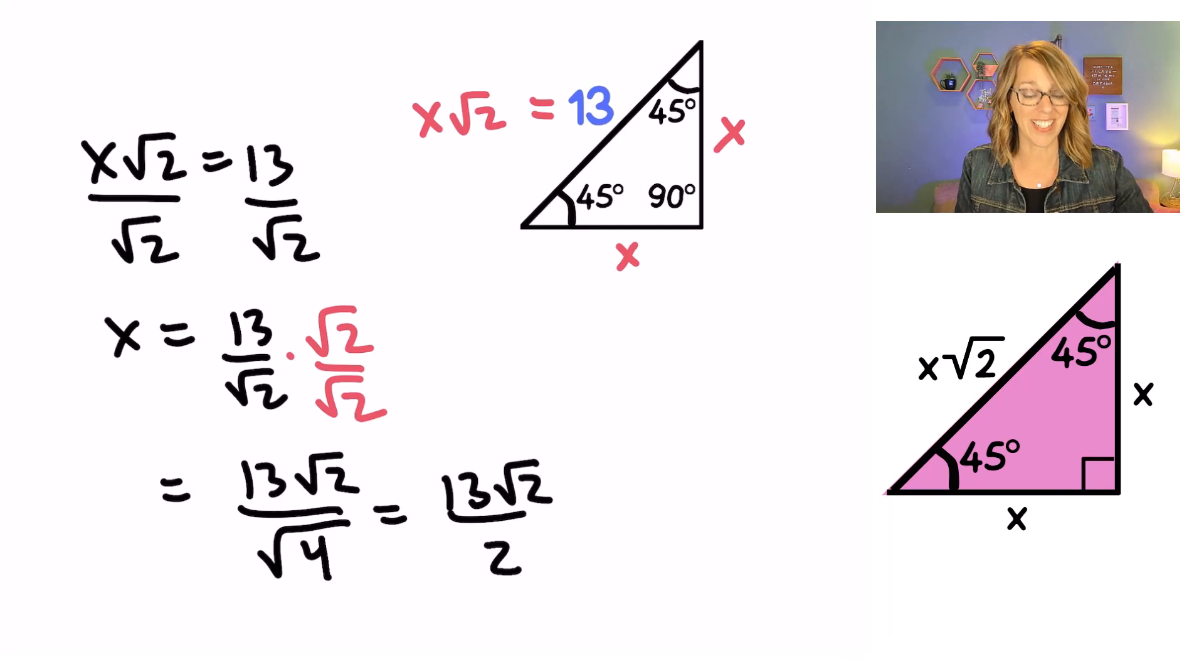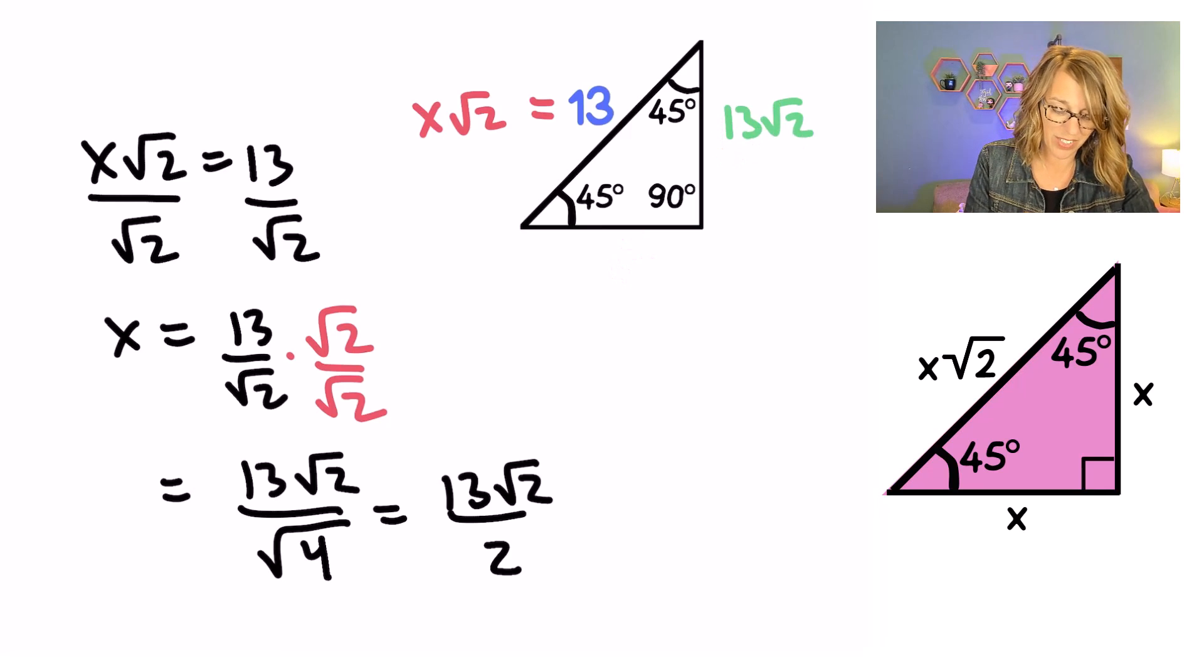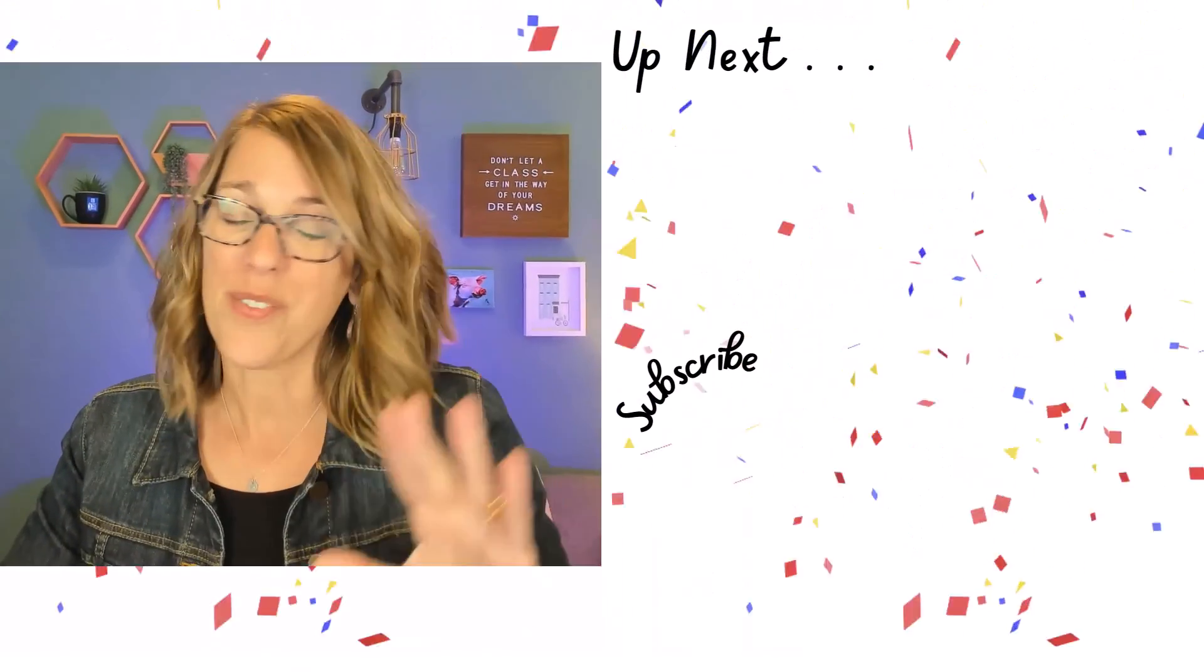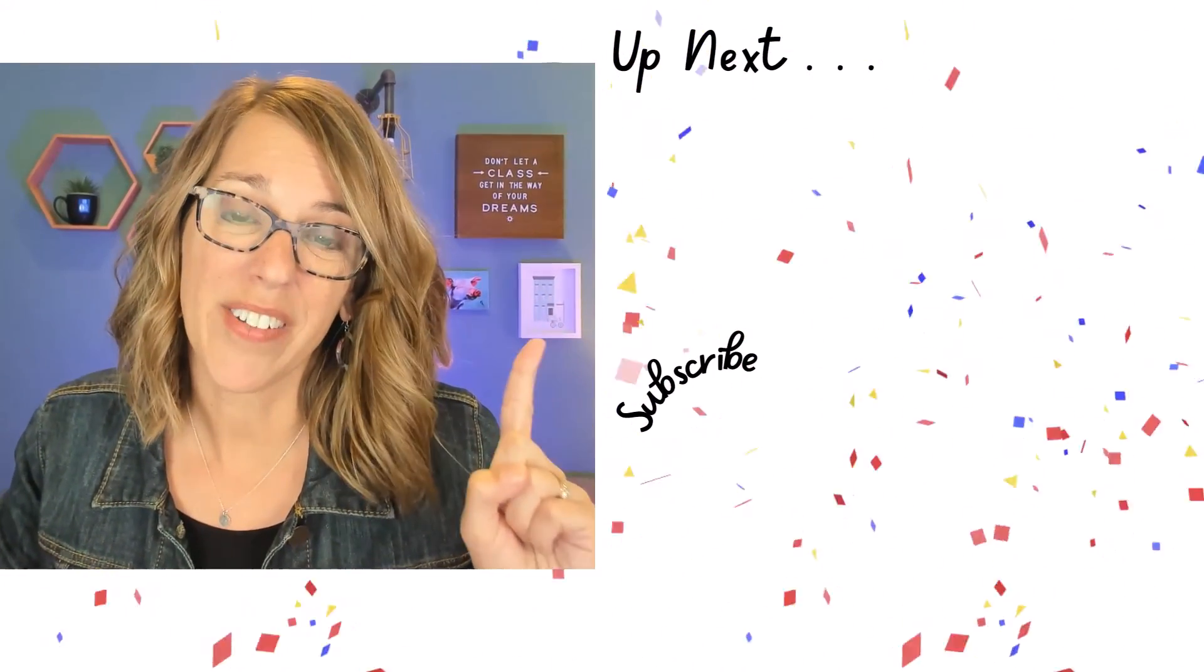So our simplified sides, even though they don't feel super simplified, are 13 radical 2 over 2. You are doing great. I've got more on triangles for you here.